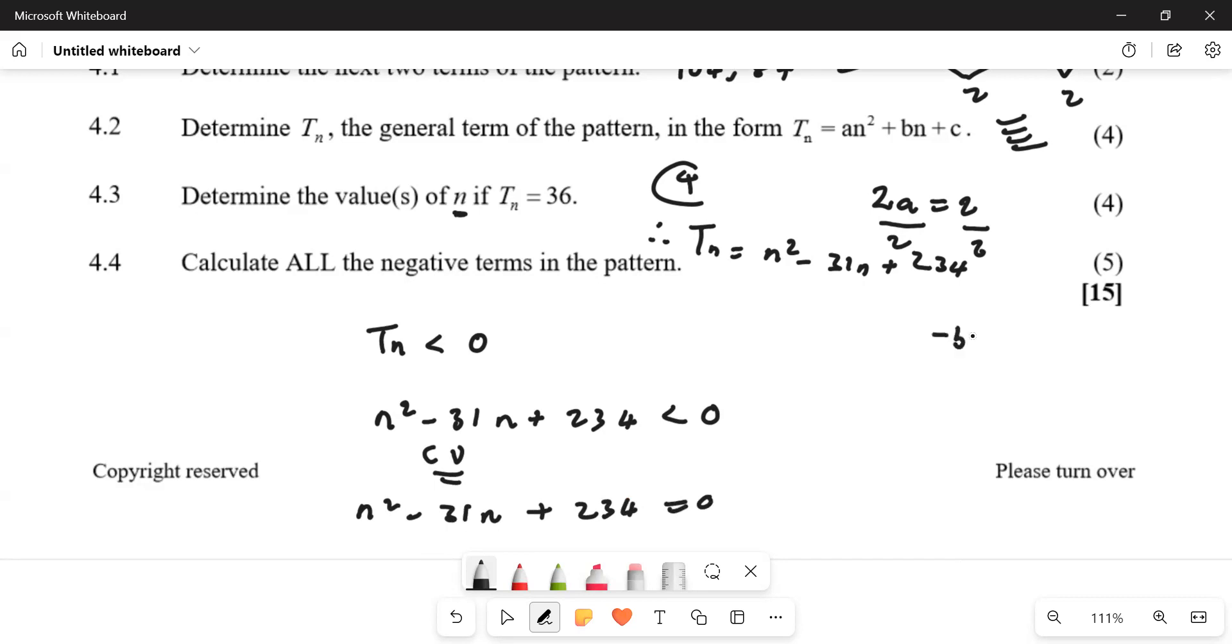So finding my critical values, n squared minus 31n plus 234 equals to zero. Then using the quadratic formula, which is plus or minus b squared minus 4ac divided by 2a. So n is 18, 18. So it means n should be greater than 13 but less than 18.